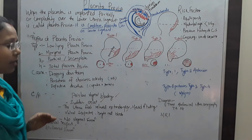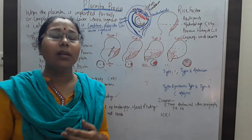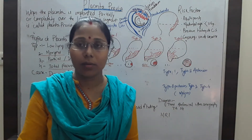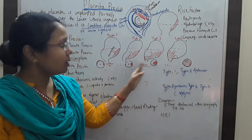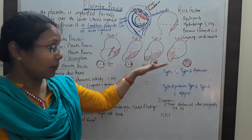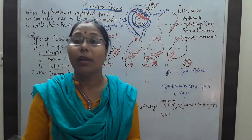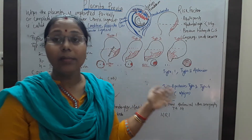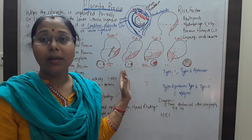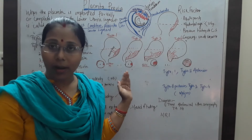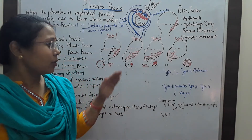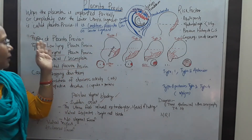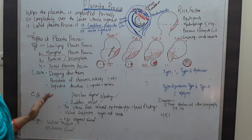After knowing the clinical features, we go for investigations. We do trans-abdominal sonography; from this trans-abdominal ultrasonography, we can find the position of the placenta. For the confirmatory test, we go for MRI — magnetic resonance imaging. Through this investigation, we can find the position of the placenta previa and confirm whether it is Type 1, Type 2, Type 3, or Type 4. This is all about placenta previa — the types of placenta, causes, clinical features, and investigations.